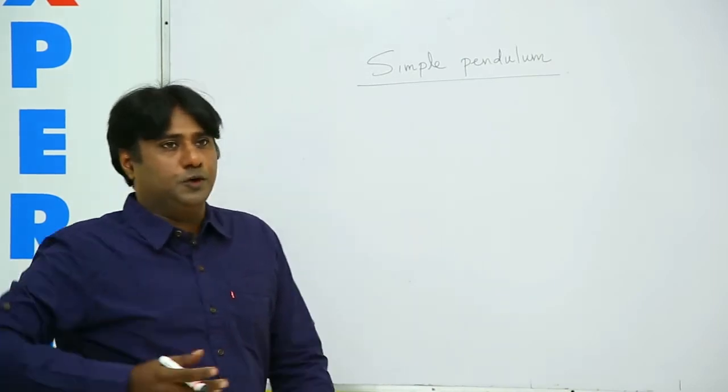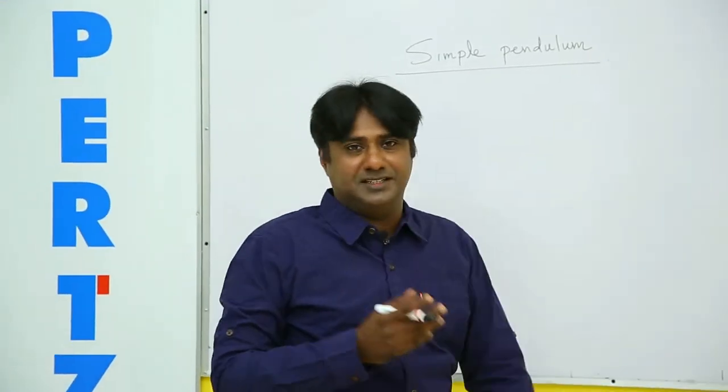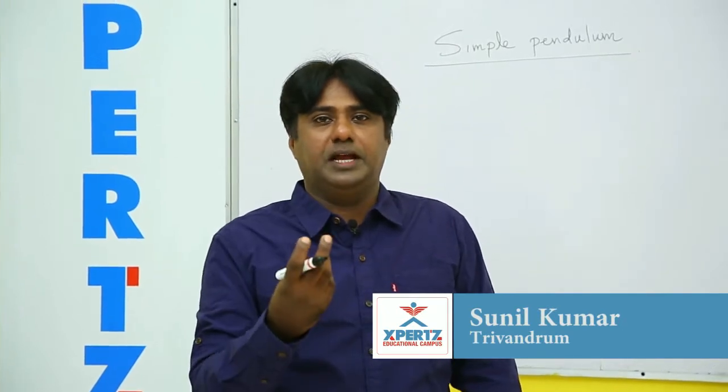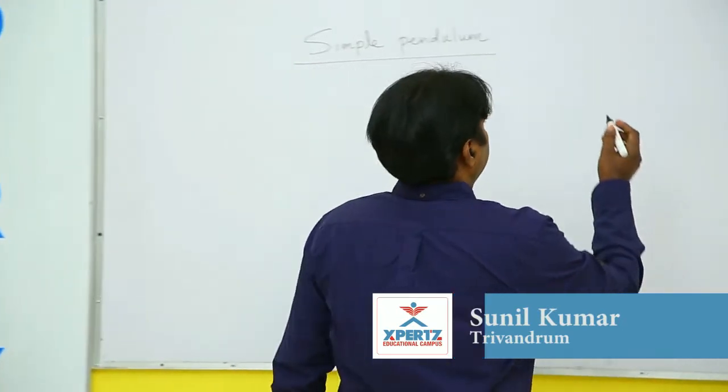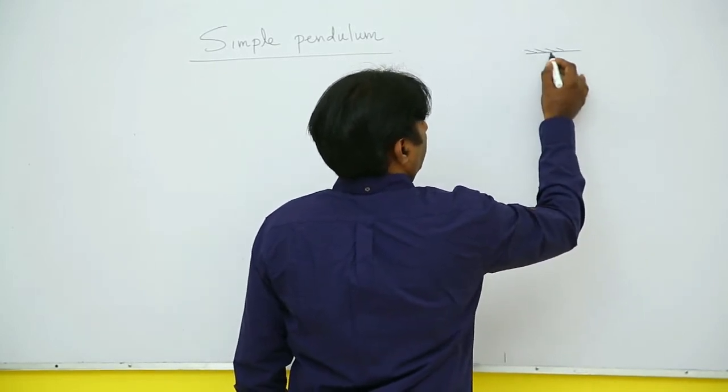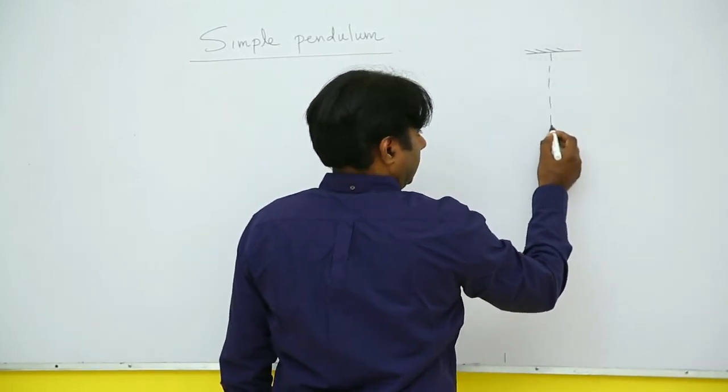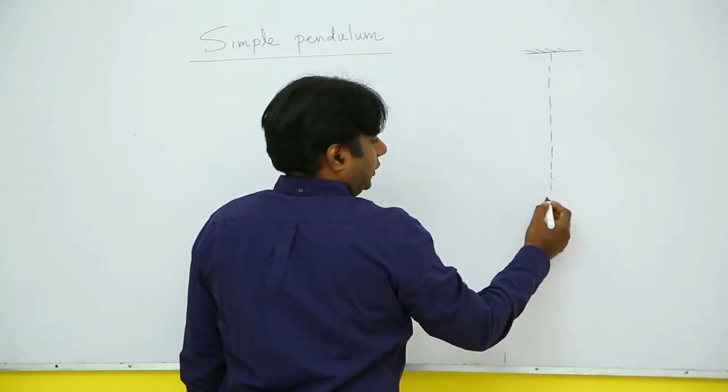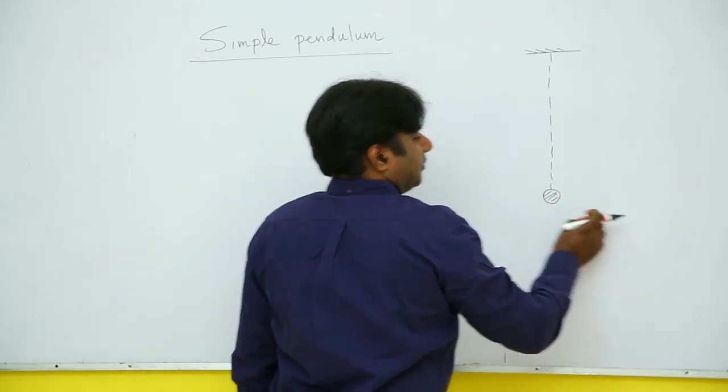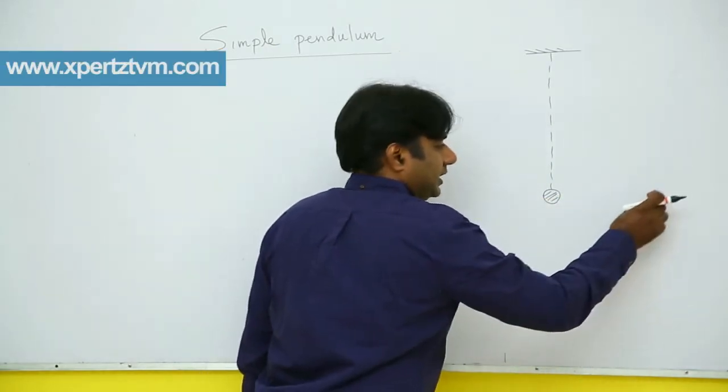Simple pendulum as you all know is very simple in its construction, that is why simple pendulum. You have a bob at the end of a light string. Suppose you have this situation, a string is suspended from a point at the end of which you have a bob. When displaced and left, it will oscillate like this.